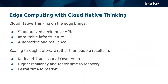In summary, applying cloud native thinking to the edge brings standardized declarative APIs with immutable infrastructure, automation, and resiliency built in. This allows us to scale operations and business models — which are margin-driven — through software rather than people. This makes the edge feasible as a concept and business through reduced total cost of ownership, higher resiliency, faster time to recovery, and faster time to market.